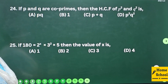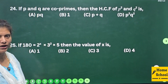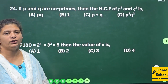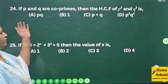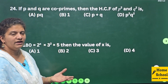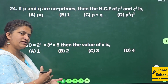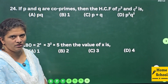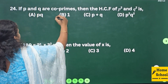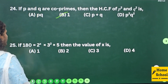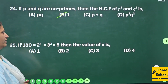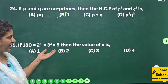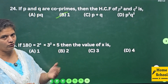Question 24: If p and q are co-primes, then the HCF of p² and q² is — if p and q are co-primes, their HCF is 1, and for their squares the HCF is also 1. Therefore option B: 1.